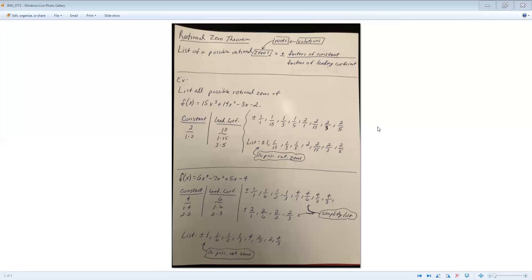So I'm going to take the 1 and the 2 and place them over the 1, 15, 3, and 5. So there's plus or minus 1 over 1, 1 over 15, 1 over 3, 1 over 5, and then 2 over 1, 2 over 15, 2 over 3, and 2 over 5. Simplify your list, and once again that plus or minus is in front of each one of those numbers, and that will give me 16 possible rational solutions that I could choose from.